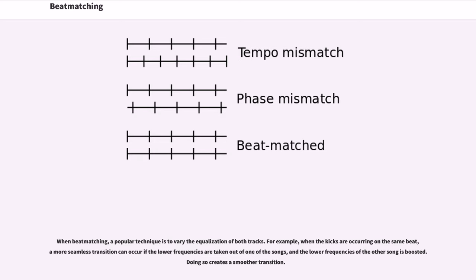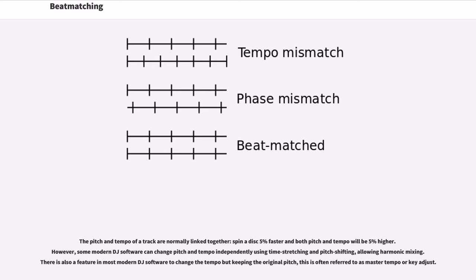The pitch and tempo of a track are normally linked together—spin a disc 5% faster and both pitch and tempo will be 5% higher. However, some modern DJ software can change pitch and tempo independently using time stretching and pitch shifting, allowing harmonic mixing. There is also a feature in most modern DJ software to change the tempo while keeping the original pitch, often referred to as master tempo or key adjust.